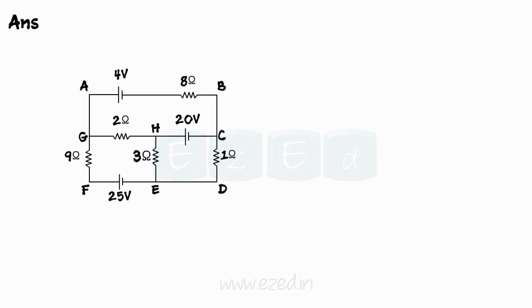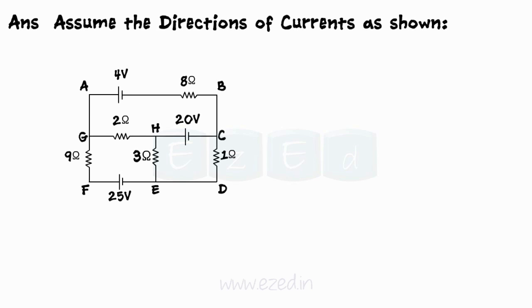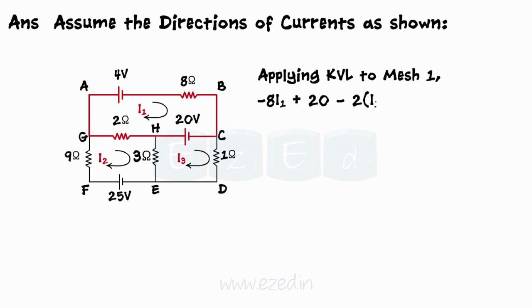First, we assign the names to every node of the circuit and assume the clockwise direction for the mesh currents as shown. Applying KVL to mesh 1, we get minus 8I1 plus 20 minus 2 into I1 minus I2 minus 4 equals 0. Simplifying the equation, we get 10I1 minus 2I2 equals 16.